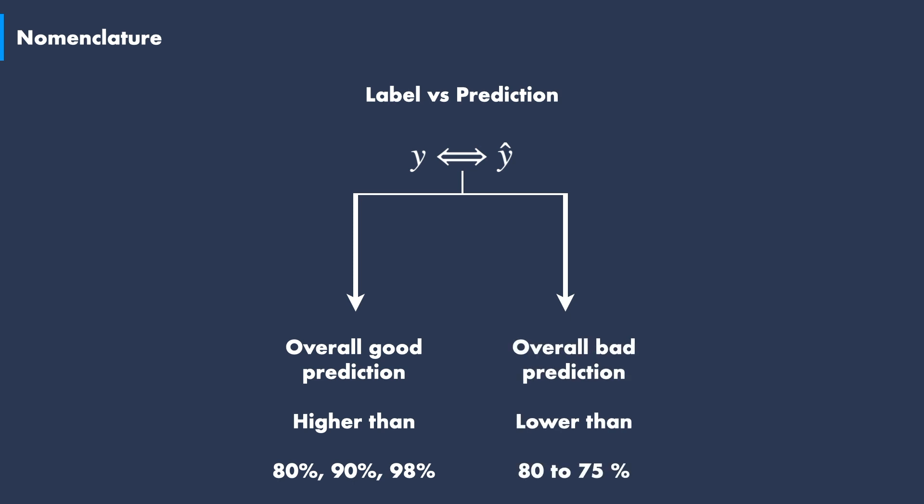On the other hand, predictions with overall accuracy lower than 75% are usually seen as bad, and consequently, improvements need to be made somehow to increase the overall accuracy of the prediction.